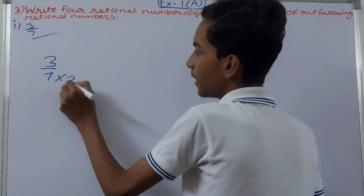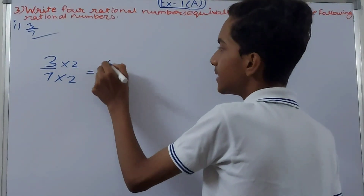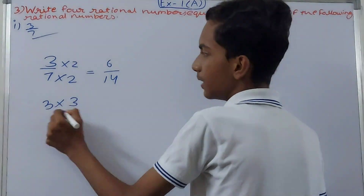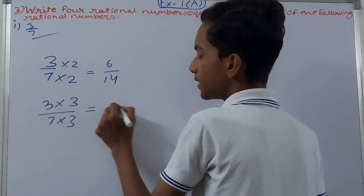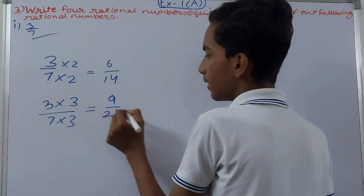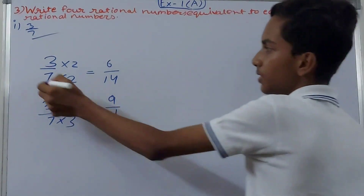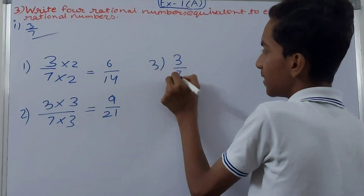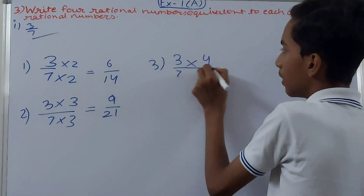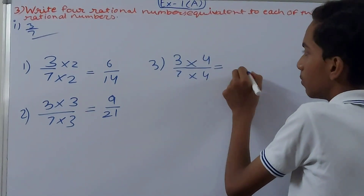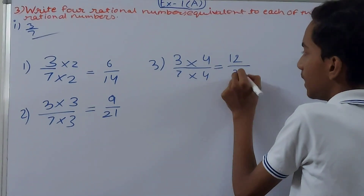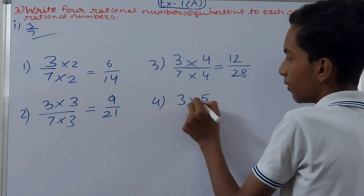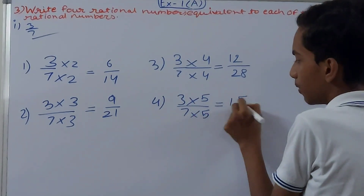For 3 by 7, the first equivalent rational number will be 6 upon 14. The second one: 3 into 3 upon 7 into 3, which is 9 upon 21. The third one: 3 by 7 into 4, which is 12 upon 28. And the fourth one: 3 into 5 upon 7 into 5, which is 15 upon 35.